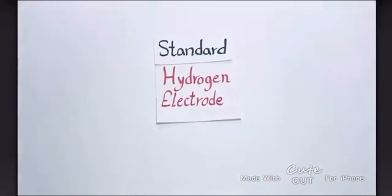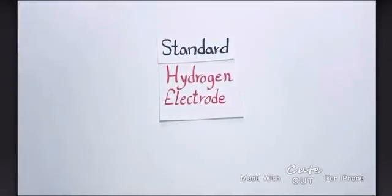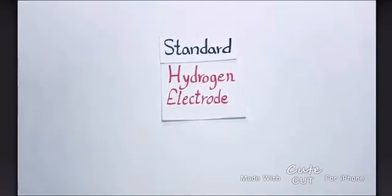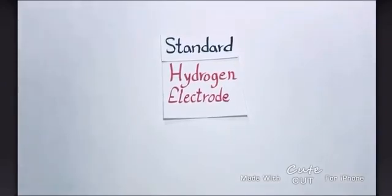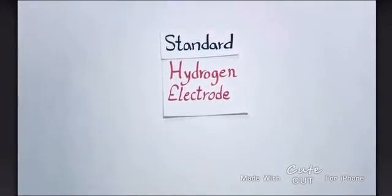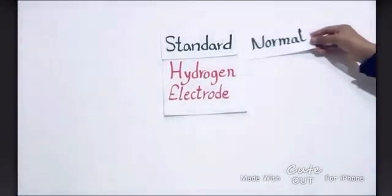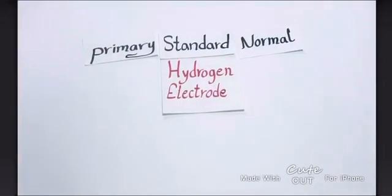We all compare ourselves to someone — can I run faster than you? These are relative comparisons that don't give a lot of useful data. When we use a standard through our comparisons, we ensure accurate results. In this educational video, we will talk about the standard hydrogen electrode, also named as the normal or primary hydrogen electrode.